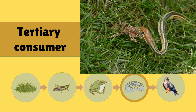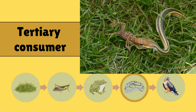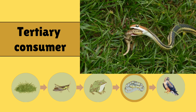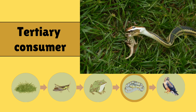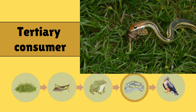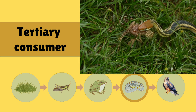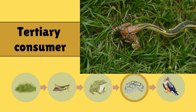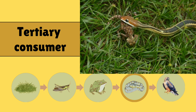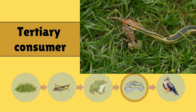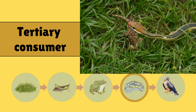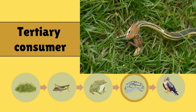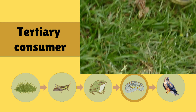Coming to the tertiary consumer. In the photo, we see the tertiary consumer is a snake — it is the fourth trophic level. The snake is the tertiary consumer. The snake is the predator and the frog is the prey. Snake eats frog.